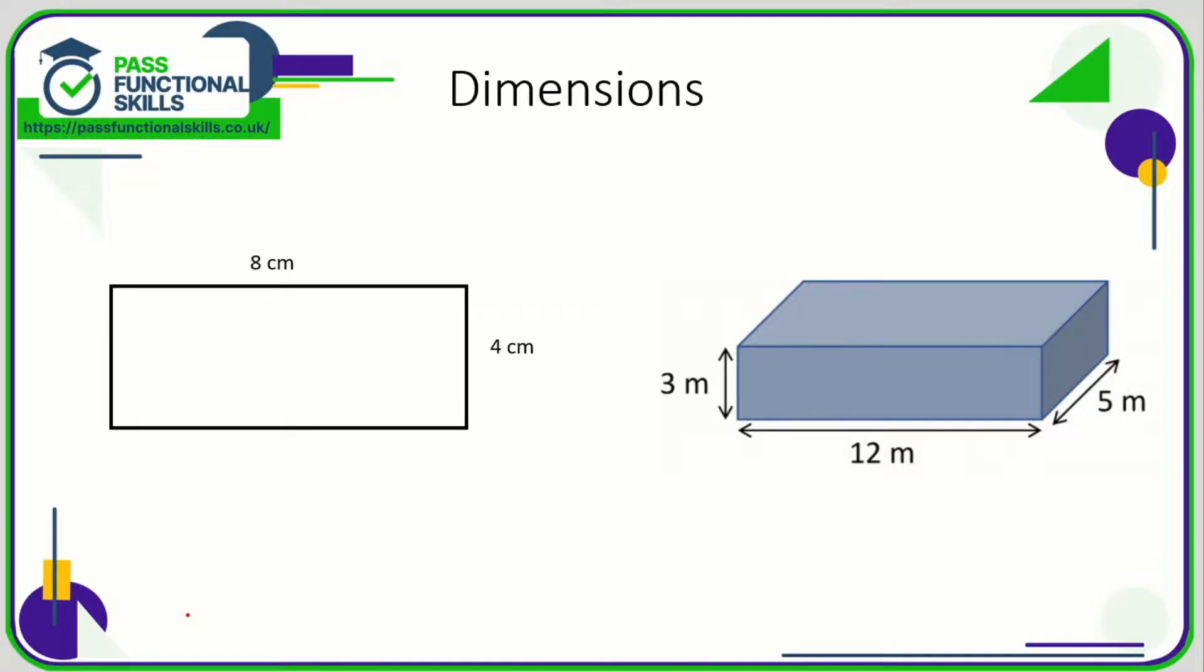Let's take a look at dimensions. On the left hand side we've got a rectangle. Now this is a 2D shape, that means it has two dimensions: it has a length and it has a width. And from these dimensions we can work out the area and we can also work out the perimeter.